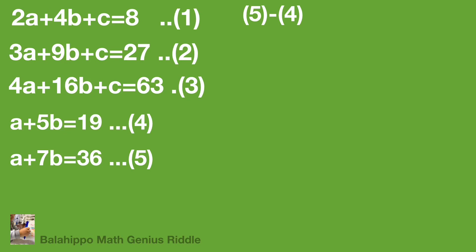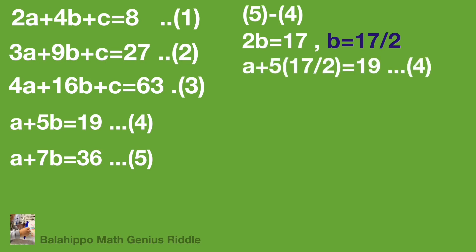So 2b = 17, which means b = 17/2. Substituting b = 17/2 into equation 4, we get a = -47/2.